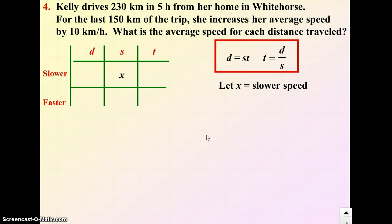So if we figure out her slower distance, 230 in total minus 150 for the last bit. So the slower distance should be 230 minus 150, and her faster distance should be 150. She increased her speed for the last 150 kilometers. I now have two boxes in my chart filled. I can fill in the third box using this formula: time is distance over speed. So the time at the slower speed was a distance of 80 divided by x. And the time at the faster speed is a distance of 150 divided by x plus 10.